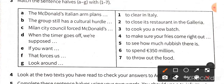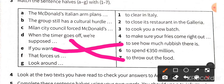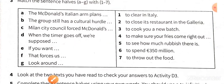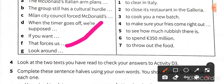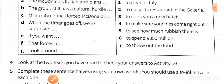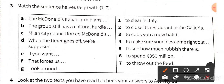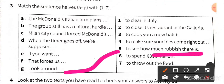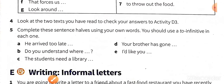I'll show you this matching activity once I get to those eight points. Example: 'when the timer goes off, we are supposed to throw out the food' — matches with 'that forces us to close its restaurant in Galleria.' Another: 'look around to see how much rubbish there is.' This is how you need to match the two texts.